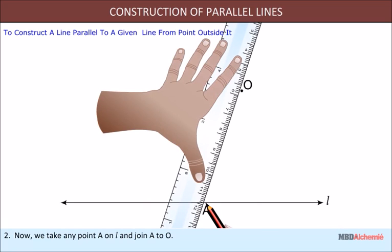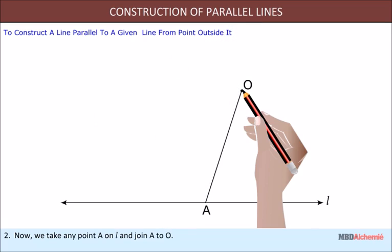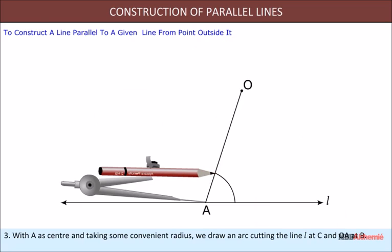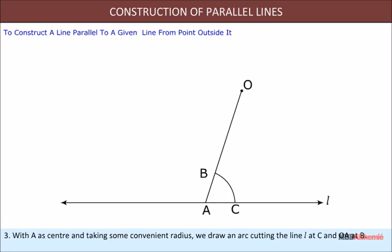Step 3: With A as center and taking some convenient radius, we draw an arc cutting the line l at C and OA at D.